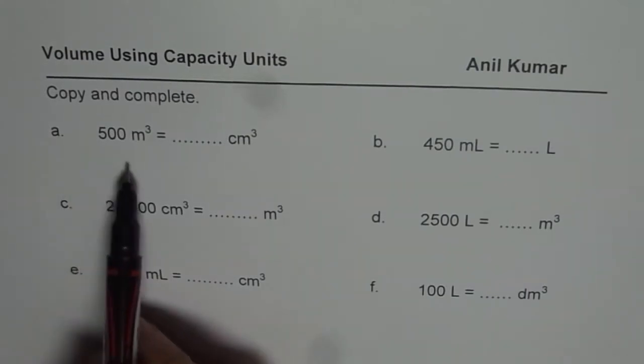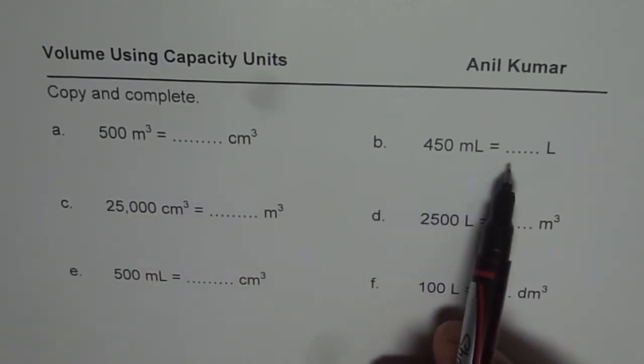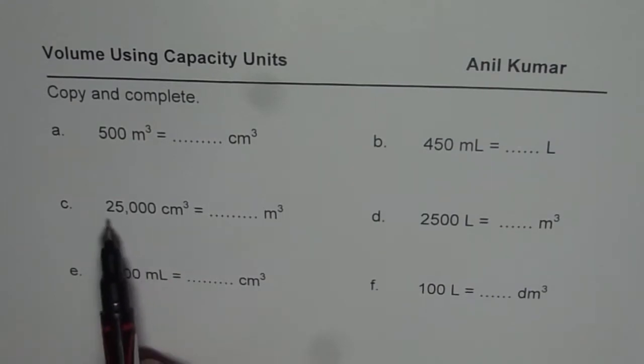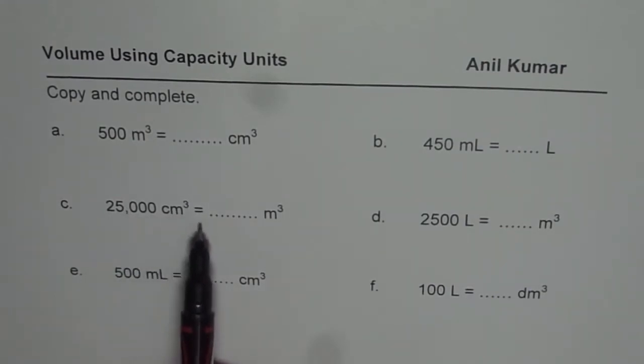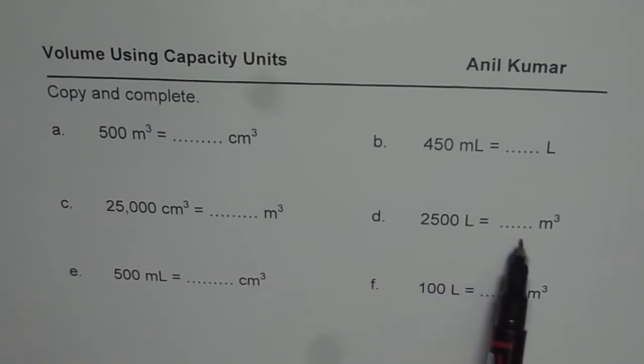So the questions here are: 500 meter cube is how many centimeter cube, 450 milliliters is how many liters, 25,000 centimeter cube equals to how many meter cubes, 2,500 liters is how many meter cube, 500 milliliters equals to how many centimeter cube and 100 liters equals to how many decimeter cube.